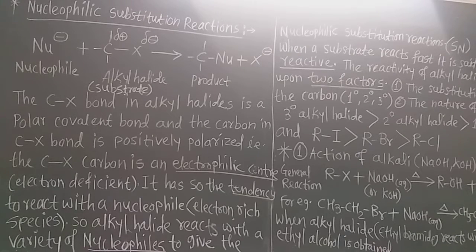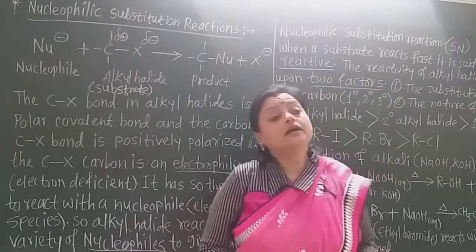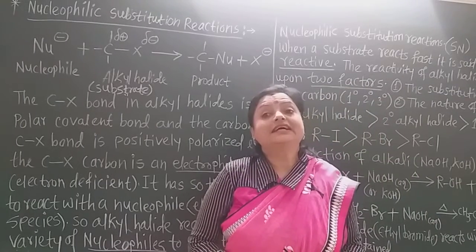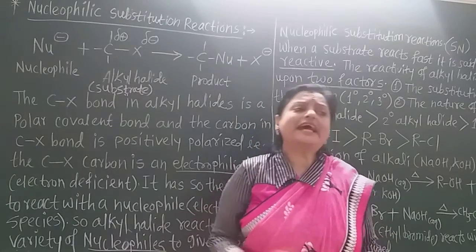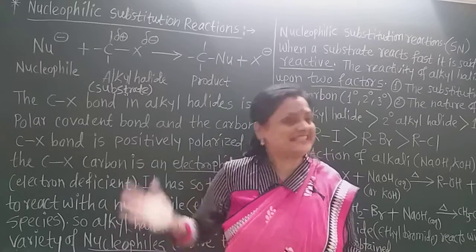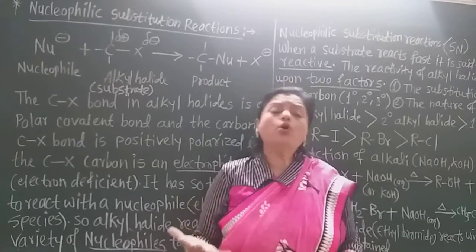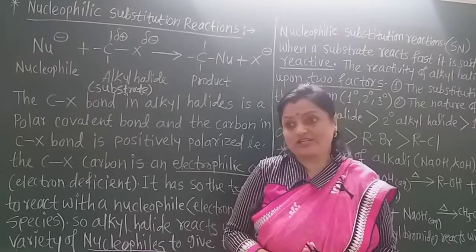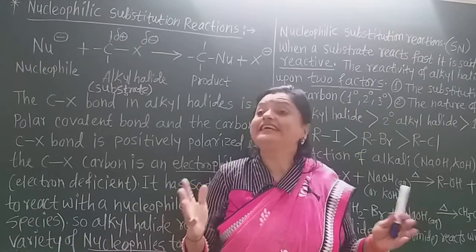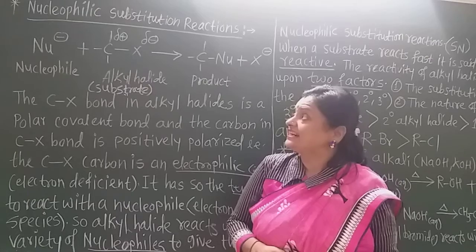Good morning students. Welcome again to the 12th science chemistry class. Over the last 5 to 6 lectures we learned about Chapter 10 - halogen derivatives, the compounds of halogens. Now we are learning in detail about their chemical reactions, particularly the chemical reactions of alkyl halides - the haloalkanes, monohalogen derivatives. This is the second reaction.